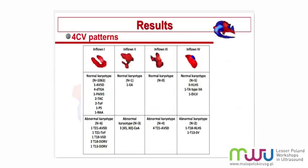Regarding the inflow patterns: in terms of separate inflows with two inflows, we had the majority of normal cases, but we also had conotruncal anomalies, and two false negatives for AVSD which were detected later in gestation at around 20 weeks. In the right dominant inflow pattern, we diagnosed one Ebstein's and three cases of aortic coarctation found together with Turner's syndrome. Regarding the initially common inflow, we had four cases of AVSD. Regarding single inflow, we had various forms of univentricular heart.